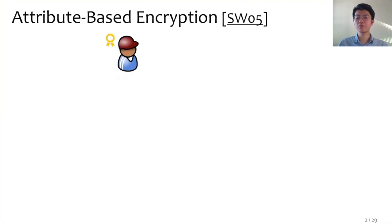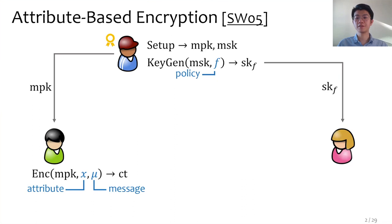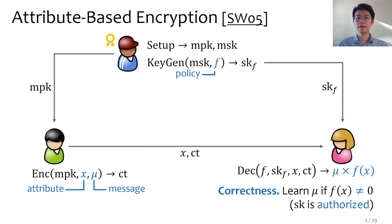Since the talk is about attribute-based encryption, let's first define it. In ABE, there's an authority setting up the system, generating the master public-secret key pair. With the master public key, everyone can encrypt a secret message mu with a public attribute x. The authority also issues secret keys to users tied to policies specific for each user. Each policy is represented by a function f. If the policy authorizes the attribute, meaning that f is non-zero, then the user can use the key to decrypt the ciphertext and recover the message — equivalent to computing mu times f. In this case, we say the key is authorized.